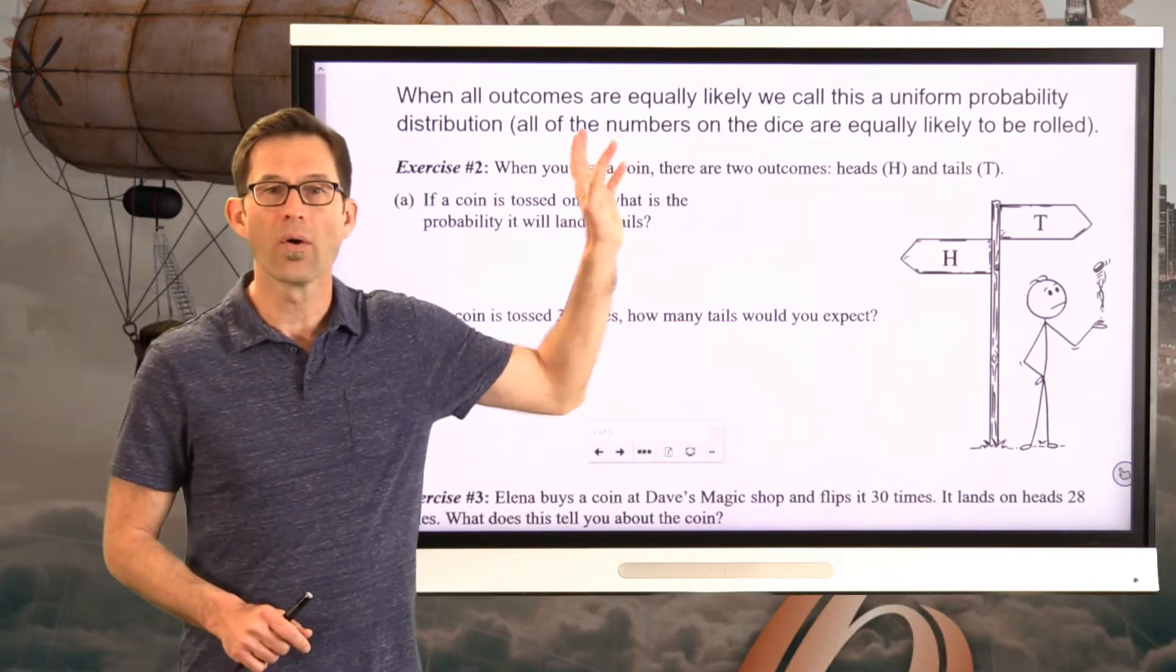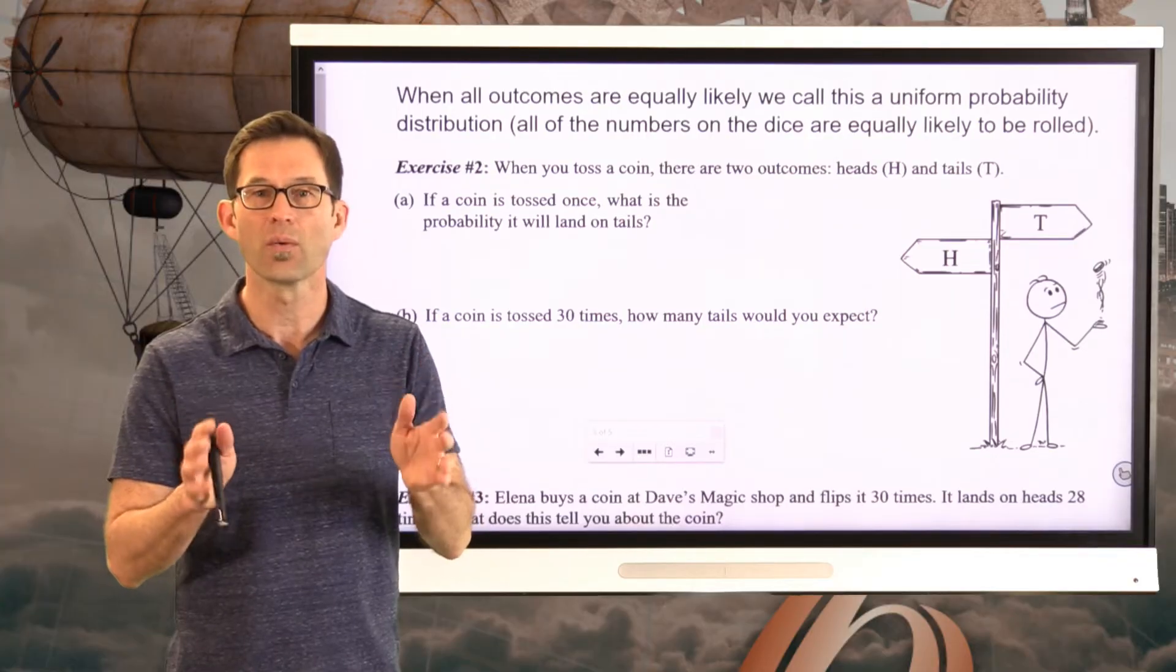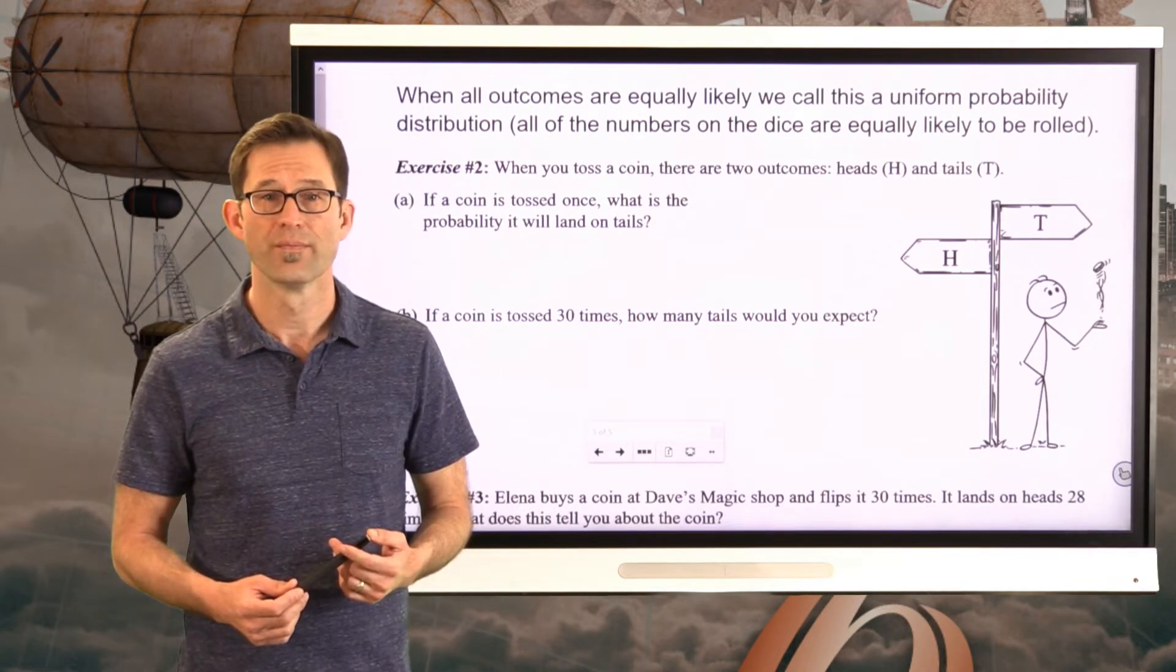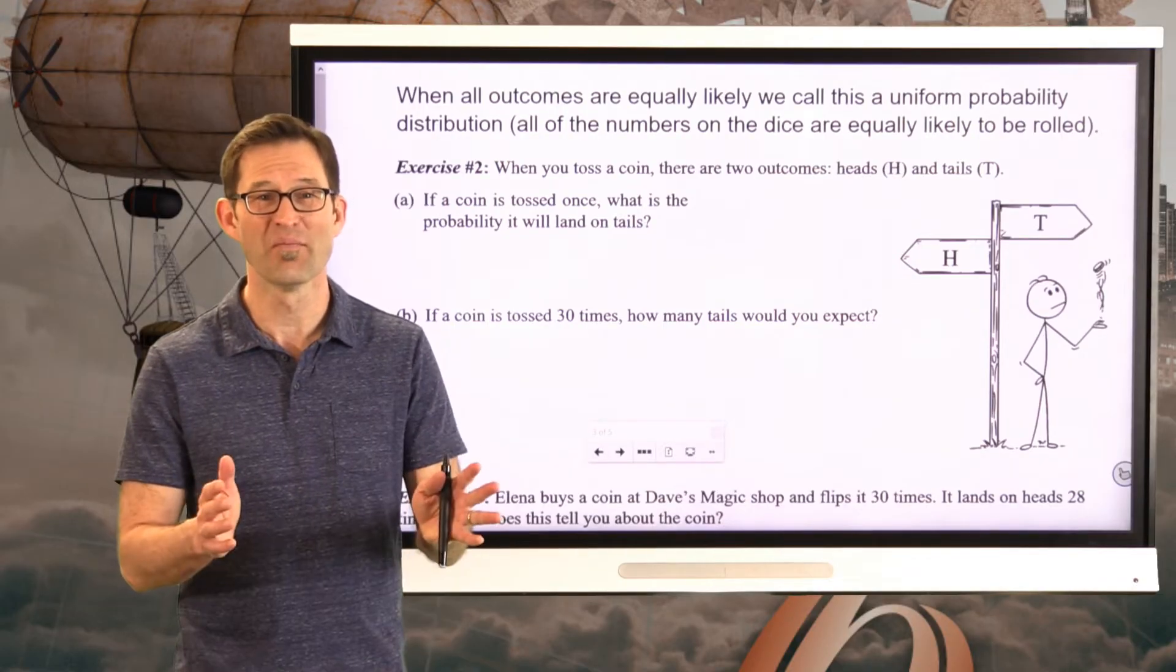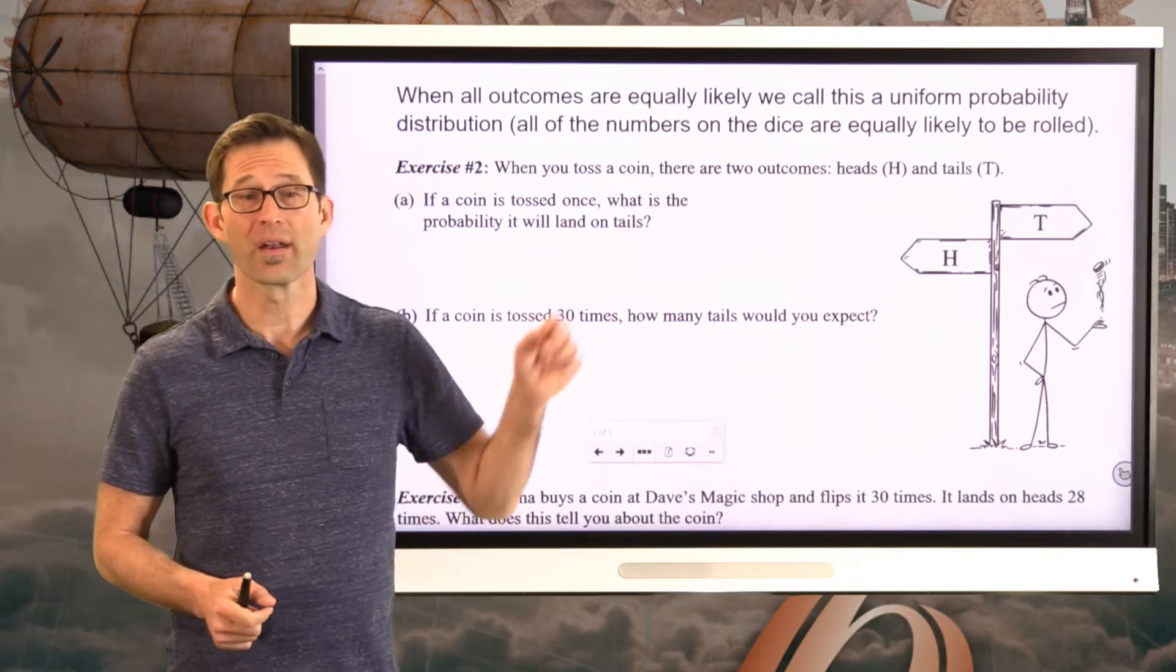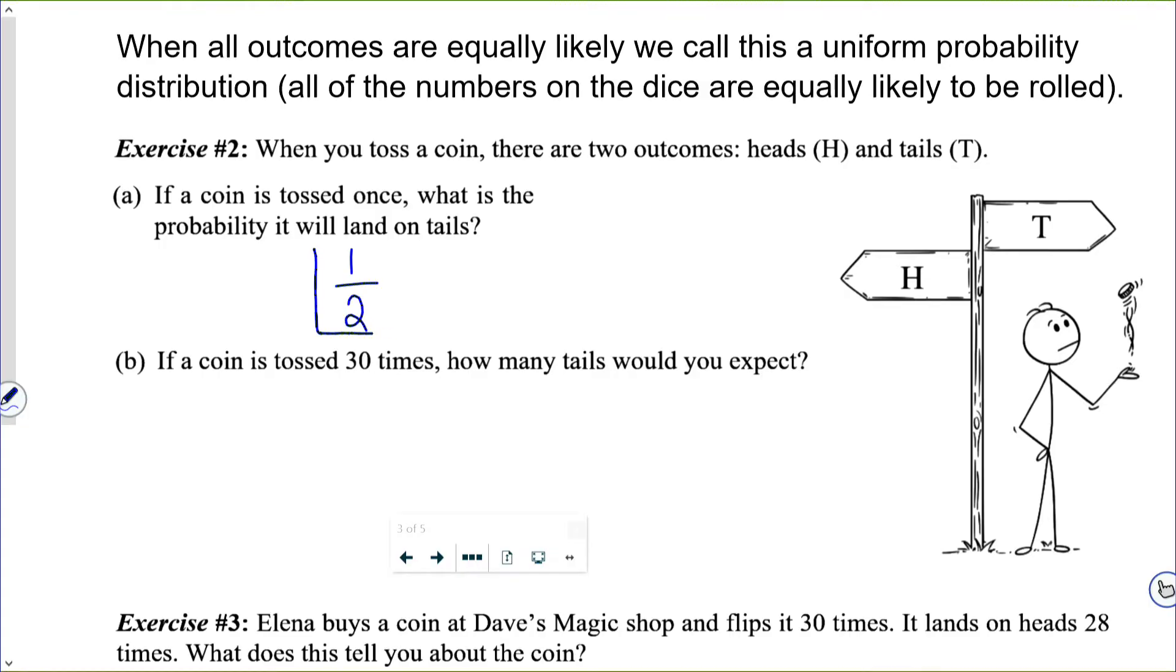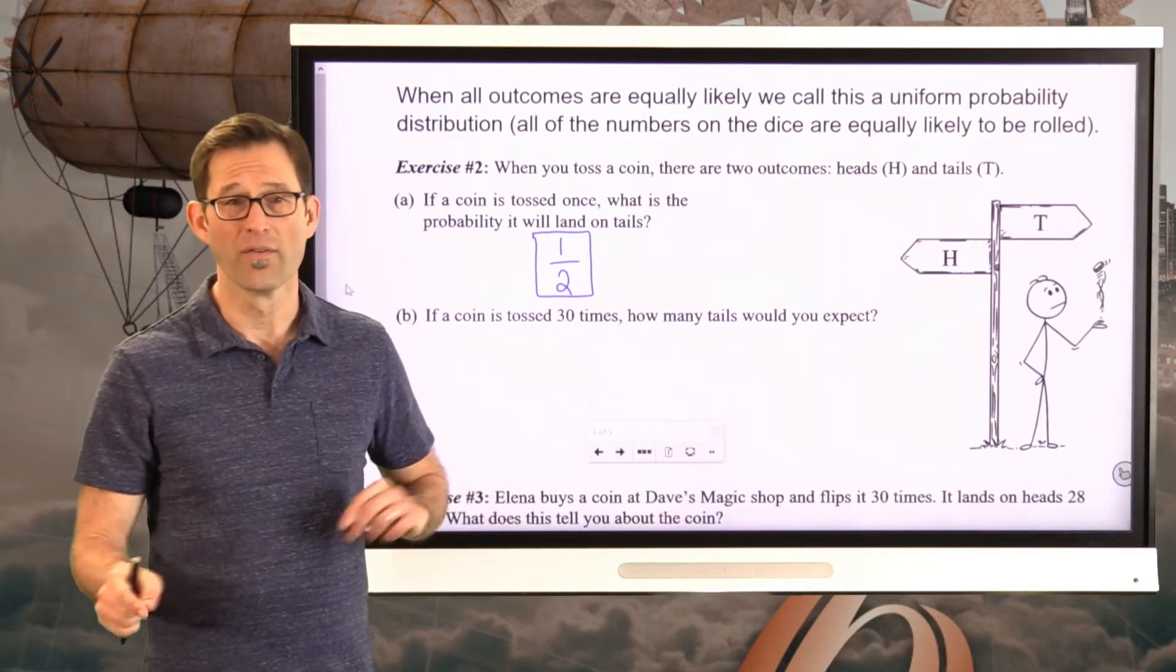When all outcomes are equally likely, we call this a uniform distribution, a uniform probability distribution. All the numbers on the die are equally likely to be rolled. A great example that comes up a lot in probability is tossing a coin. So let's take a look at that in exercise number two. When you toss a coin, there are two outcomes, heads H and tails T. Letter A: if a coin is tossed once, what is the probability it lands on tails? This should be pretty easy. There are a total of two equally likely outcomes, H and T. The probability it will land on tails is 1/2. It might be the most common probability in all probability problems.